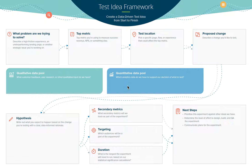Once you figure those out, determine what metrics are you trying to impact. Is it maybe average order value? Is it revenue per visit? Maybe it's email sign-up. Figure out those metrics that you're trying to improve on.